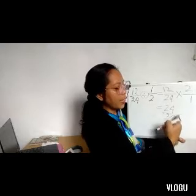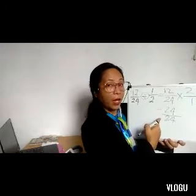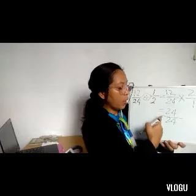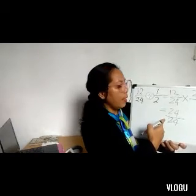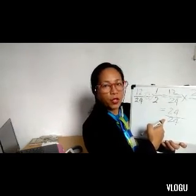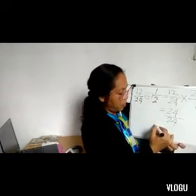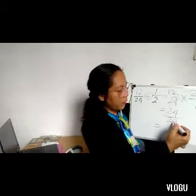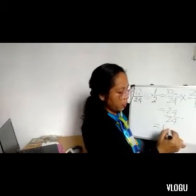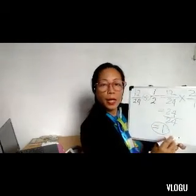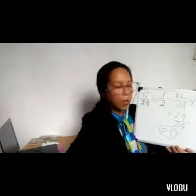12 times 2 equals 24, and 24 times 1 equals 24. Notice that the numerator and denominator are the same — this is a fraction equivalent to 1. We divide numerator by denominator: 24 divided by 24 equals 1. So your answer is whole number 1.